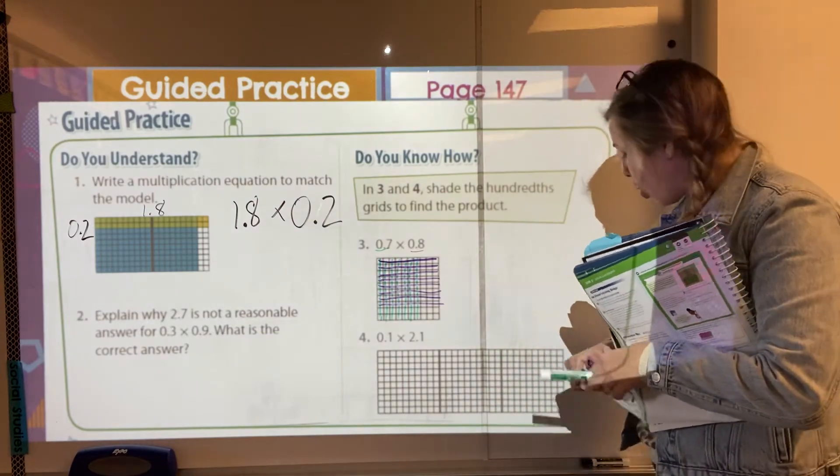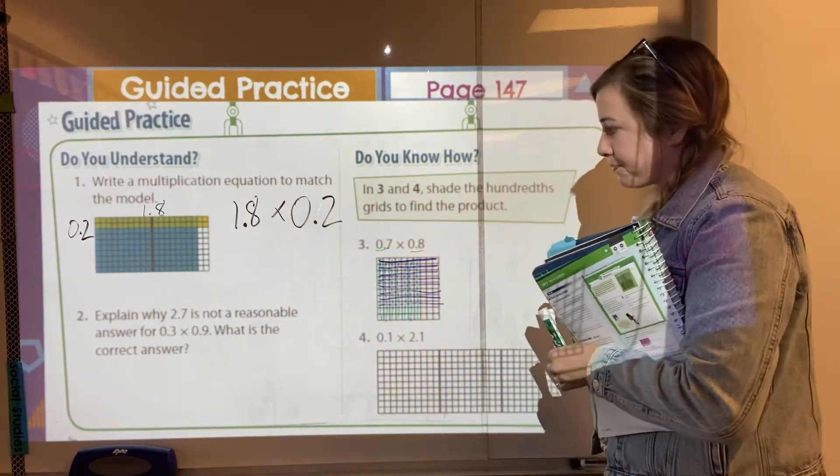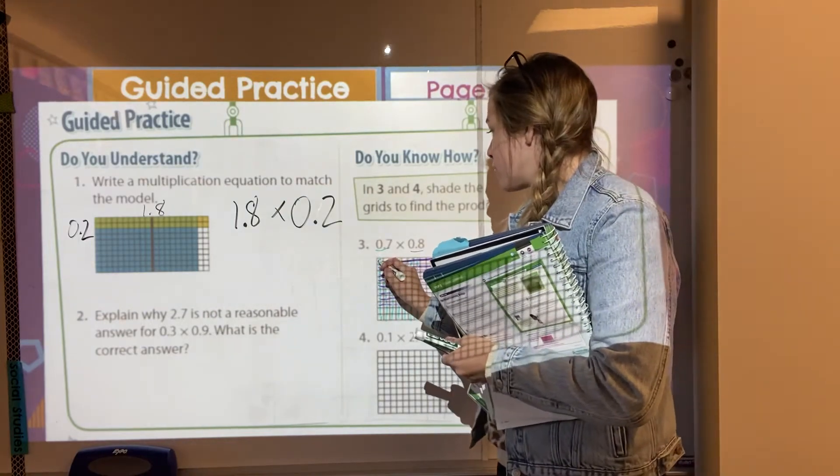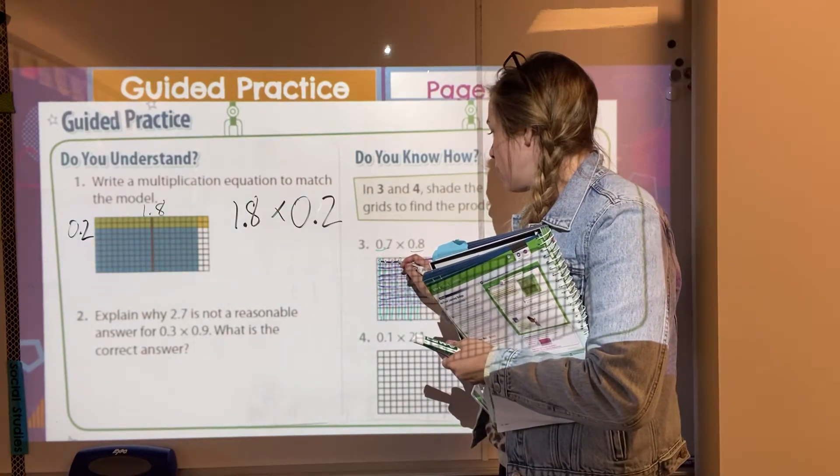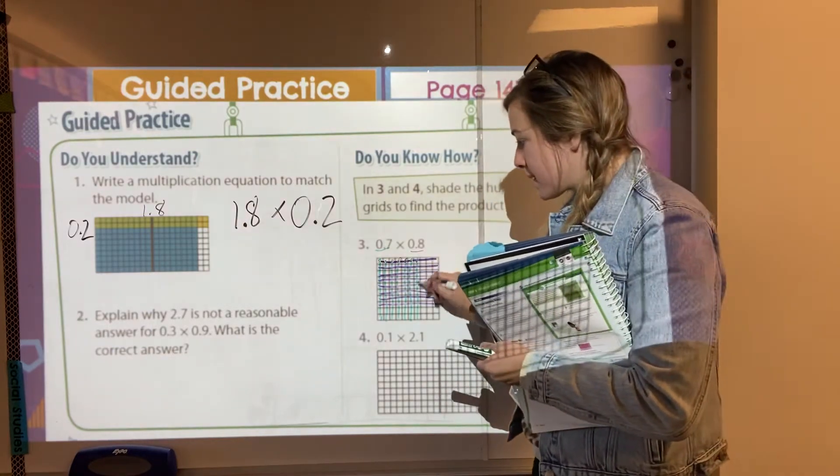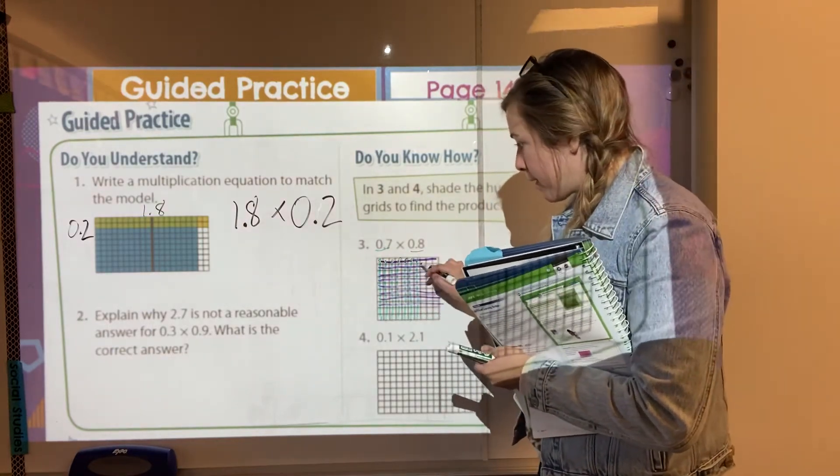And so then now I need to count up all my overlapping. So I would have in this first row one, two, three, four, five, six, seven. And then I can kind of count by sevens because I know I'm going down to just this purple line down here.